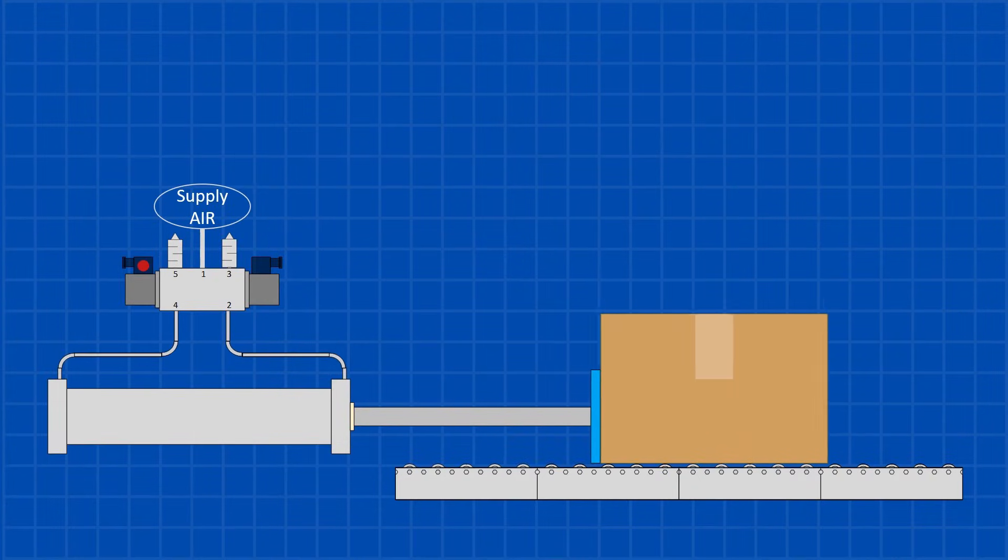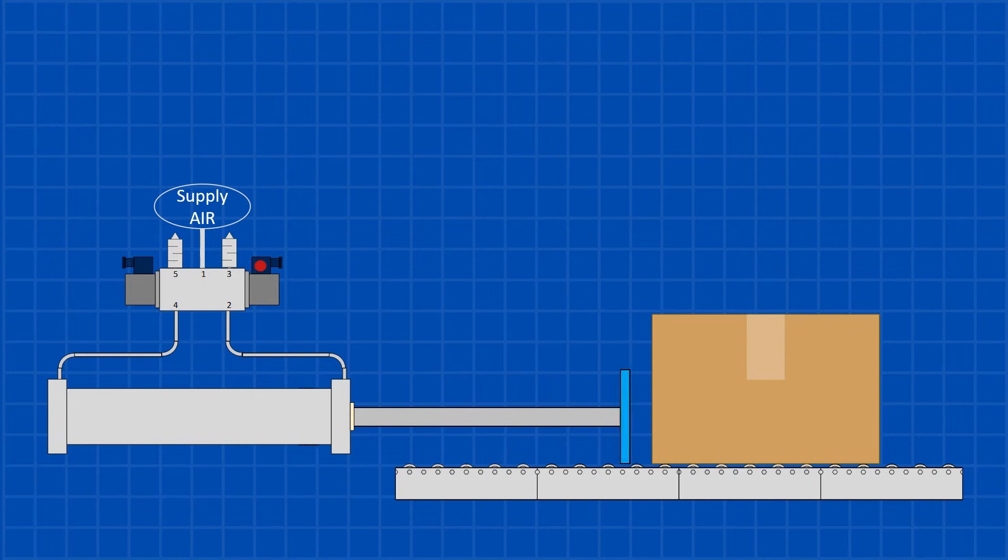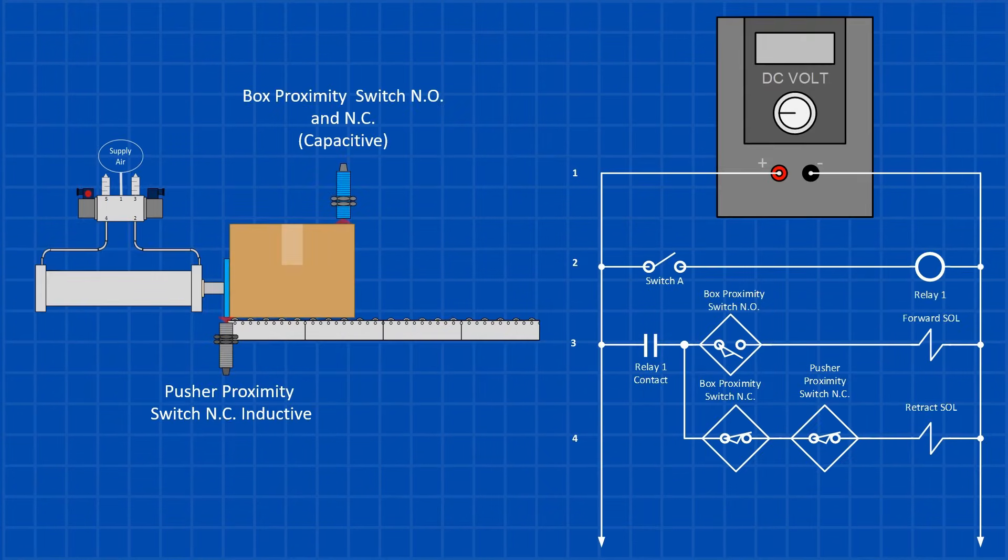Now I'm going to show you how we automate the movement of the cylinder with just three switches and one relay. This is the ladder diagram for the box pusher. In line two, once switch A is manually closed, the relay is energized, initiating the cycle. In line three, the box proximity switch detects the presence of the box and closes, energizing the forward solenoid. In line four, as the cylinder begins to extend the pusher, the cylinder moves away from the proximity switch. Since the switch is normally closed, its contacts close. Once the cylinder fully extends, the normally closed box proximity switch activates, energizing the retract solenoid.